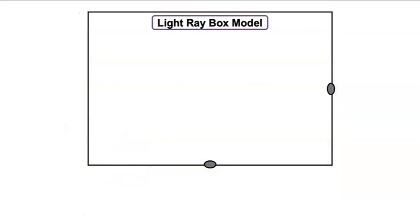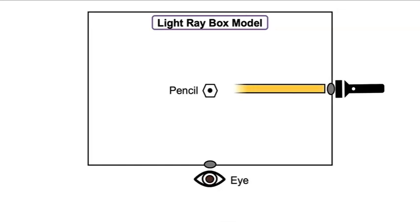Let's create a light ray box model. What should we include? We need a flashlight, pencil, and an eye. Let's show a light ray traveling from the flashlight to the pencil, and then let's show the light ray being reflected from the pencil to the eye.